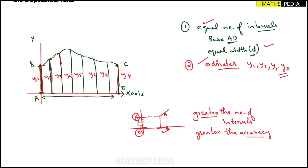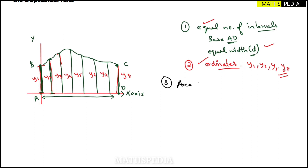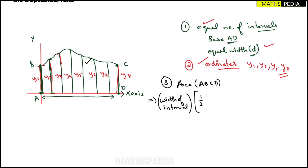The third step is straightforward — you simply substitute the formula. The formula for the area of figure ABCD is: width of interval multiplied by half of the first plus last ordinate, plus the sum of the remaining ordinates.